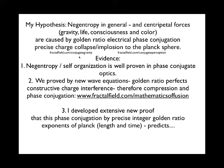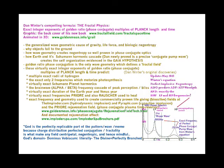The evidence: Negentropy and self-organization is well-proven in phase conjugate optics. We prove by new equations that golden ratio perfects constructive charge interference, therefore compression and phase conjugation. Those equations are at fractalfield.com/mathematics of fusion. Golden ratio is more than beauty, it's the definition of constructive interference and therefore implosion centripetal forces.